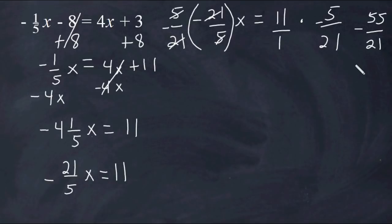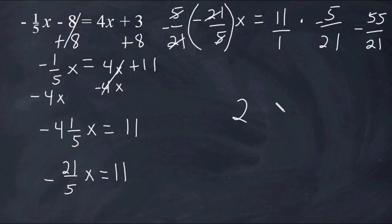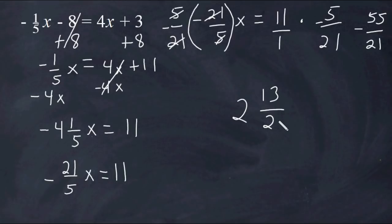Now we have to change this improper fraction into a mixed number. To do that, take the numerator and divide it by the denominator — see how many times the denominator goes into the numerator. 21 fits into 55 twice, and 2 times 21 is 42. 42 is 13 away from 55, and that is our new numerator. The denominator remains 21. So x is equal to negative 2 and 13 over 21.